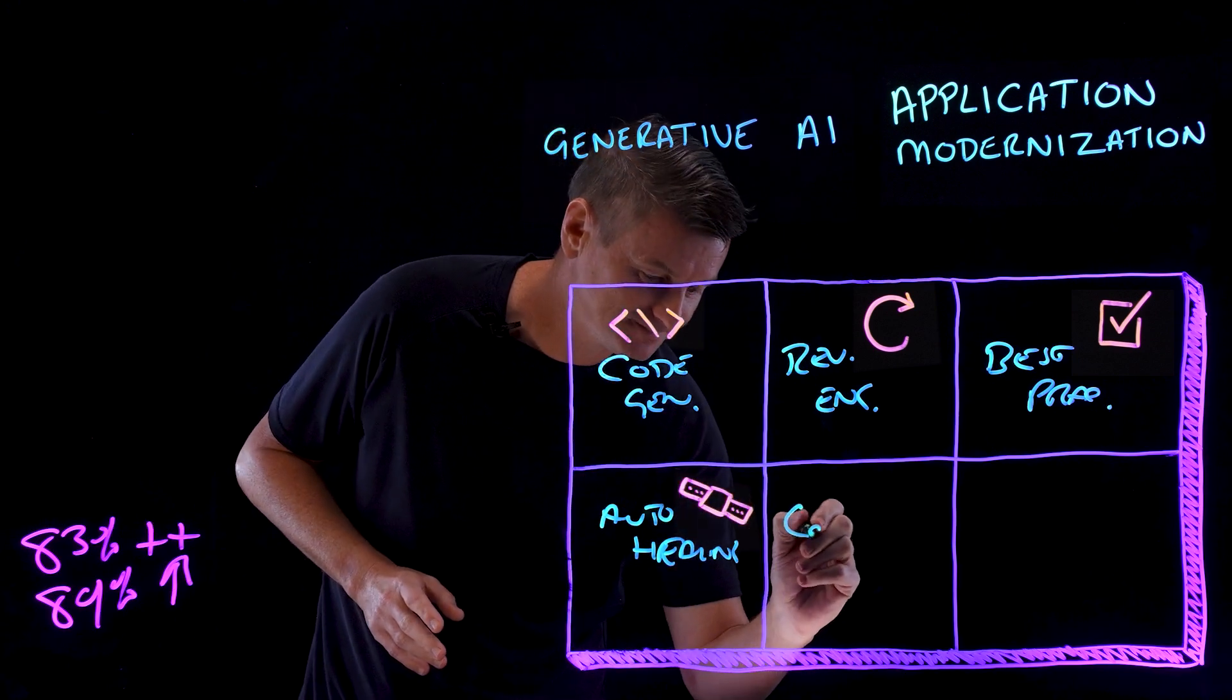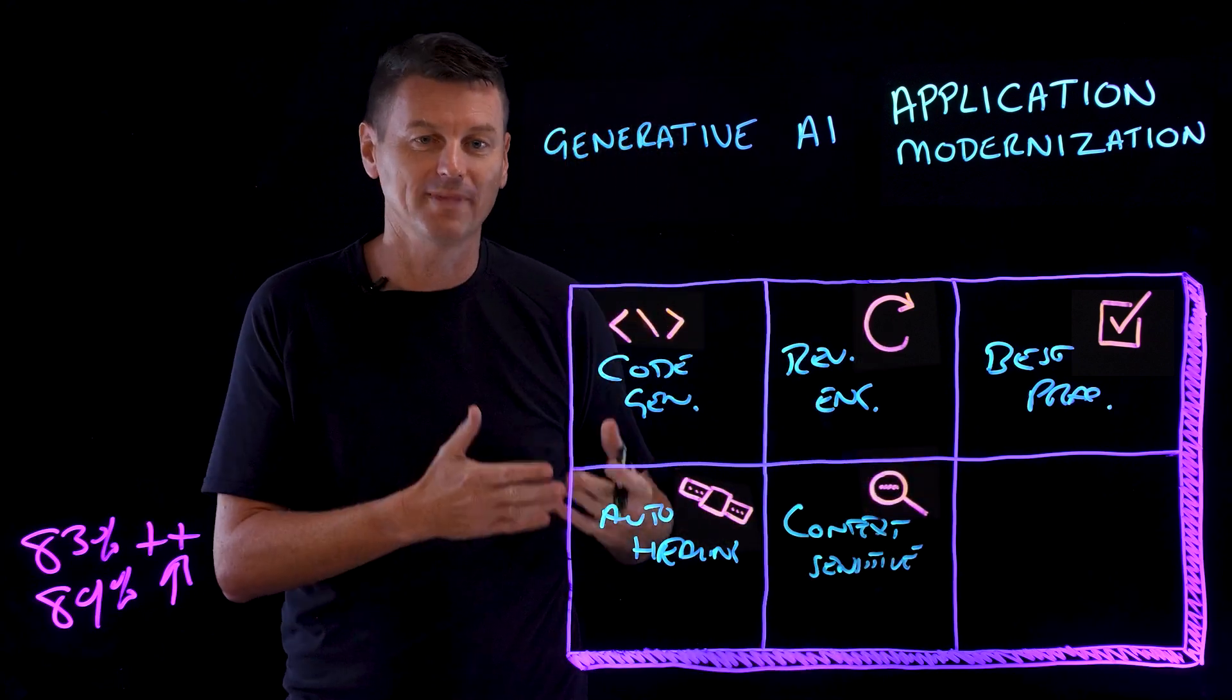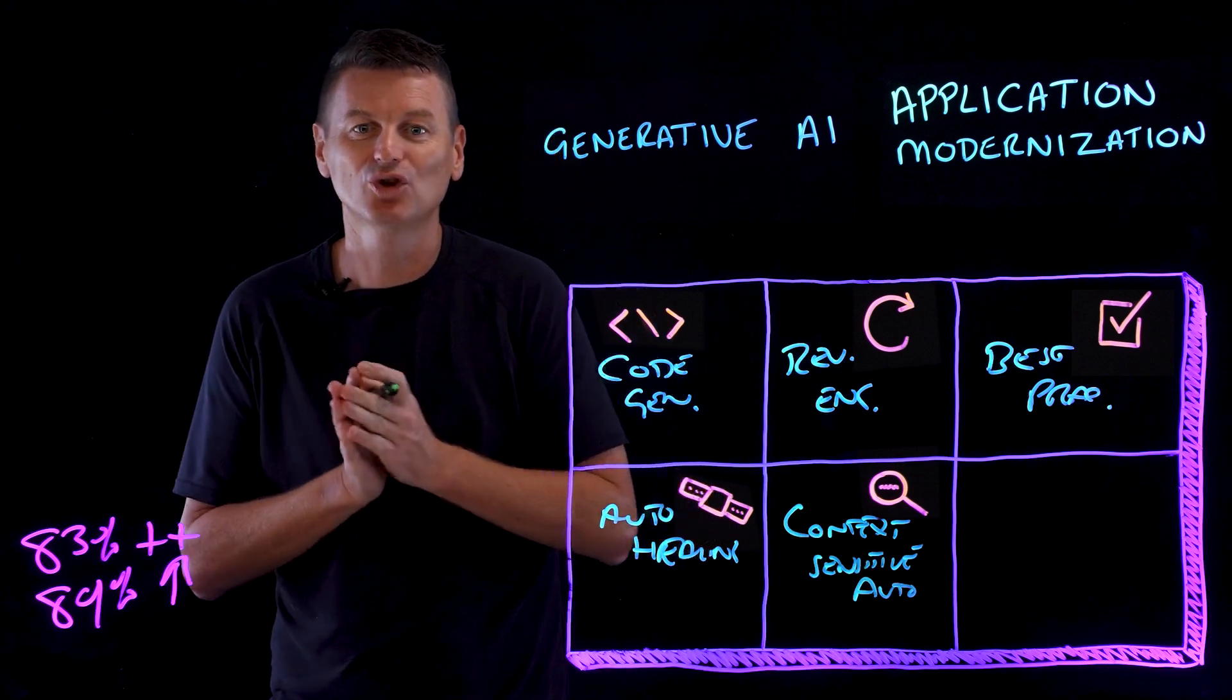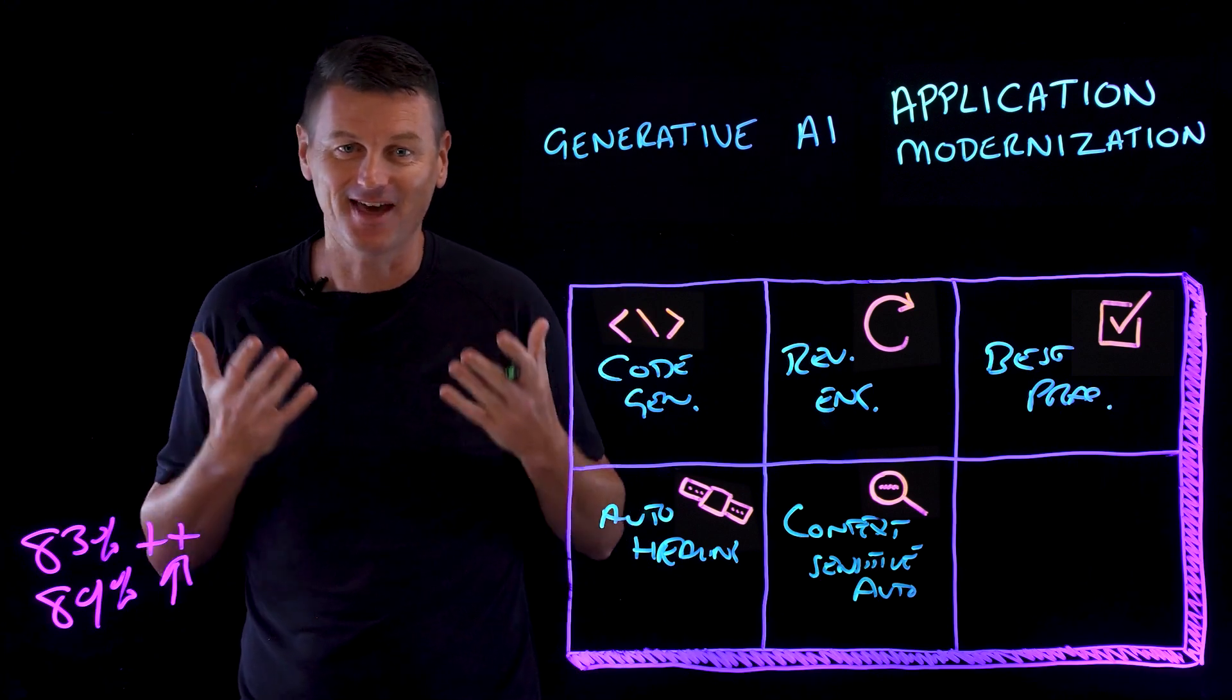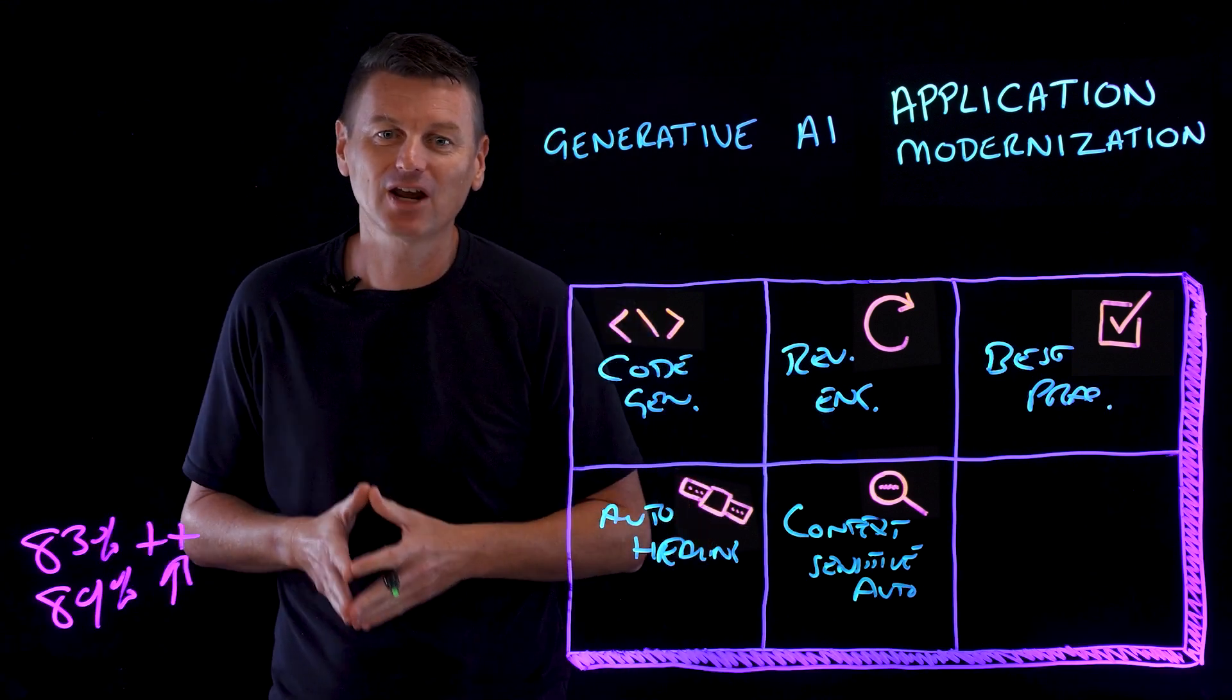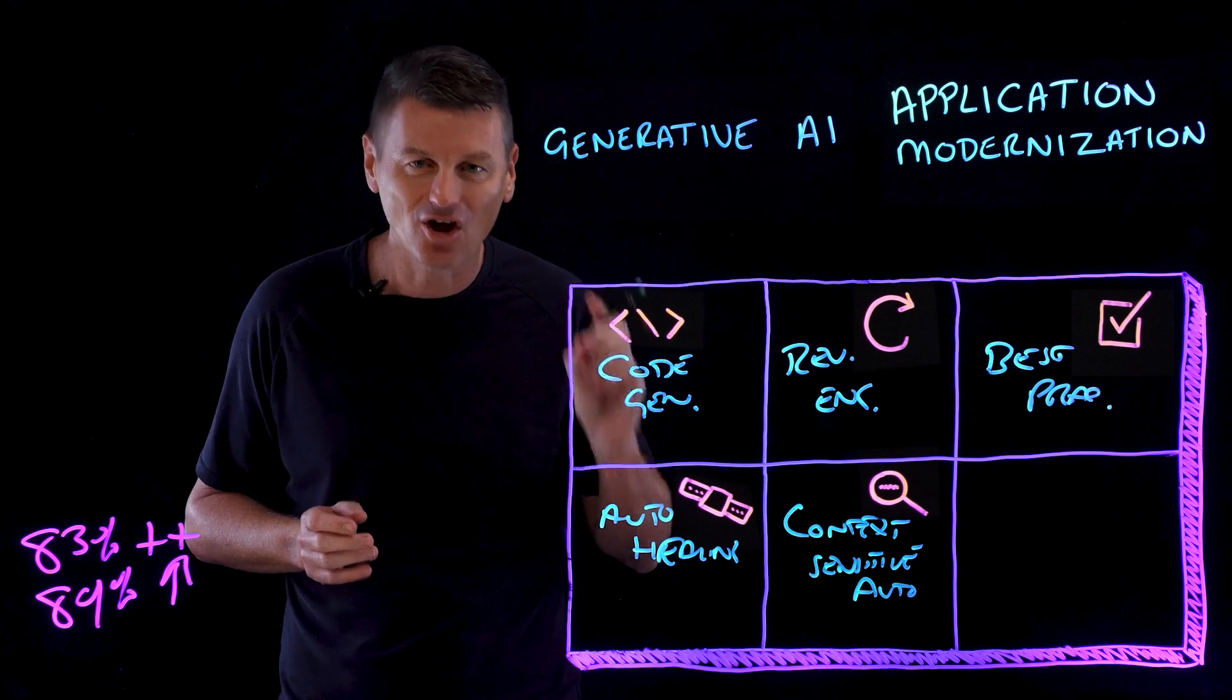Next one is context-sensitive automation. Now, what do we mean by that? Well, look, application modernization isn't just about tweaking legacy code. We're reshaping entire systems here. So, we're talking about things like transitioning to cloud platforms and incorporating DevOps. And generative AI can bring context-sensitive automation, where it doesn't just blindly apply automations. It discerns the context,